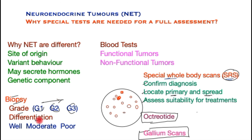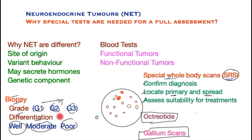The other parameter is differentiation, which looks at individual cells and how closely they resemble the tissue they originated from. Those that look very much like the original tissue are called well differentiated, moderately differentiated are in between, and poorly differentiated cells look nothing like the original. This forms three buckets — G1 with well, G2 with moderate, and G3 with poor differentiation — giving information on tumor behavior and appropriate treatments. This also requires special skill and expertise.